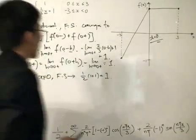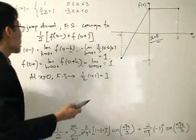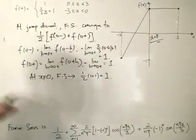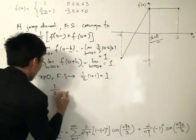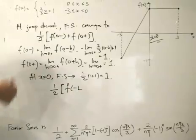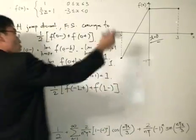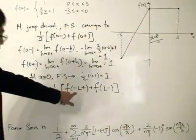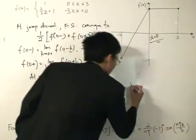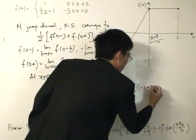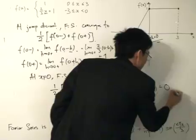We are assuming that at x equals 0 both left-hand and right-hand derivatives exist. Now, at the endpoints, the convergence test gives half of f(−L) approached from the positive side, plus f(L) approached from the negative side. Approaching from the positive side gives negative 1, and approaching from the other side gives plus 1, so the series converges to (−1 + 1)/2, which equals 0.